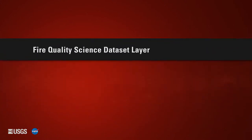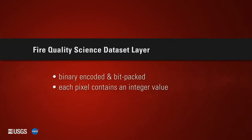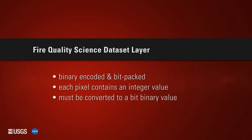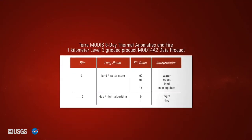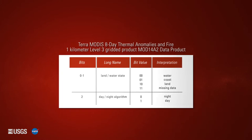The Thermal Anomalies and Fire Quality Science dataset layer is binary encoded and bit-packed, meaning each pixel in the QA layer contains an integer value that must be converted to a bit binary value for interpretation. The bit string interprets various parameters as shown by this chart. Here is an example of how to break down a bit binary value using the Terra MODIS MOD14A2 data product.